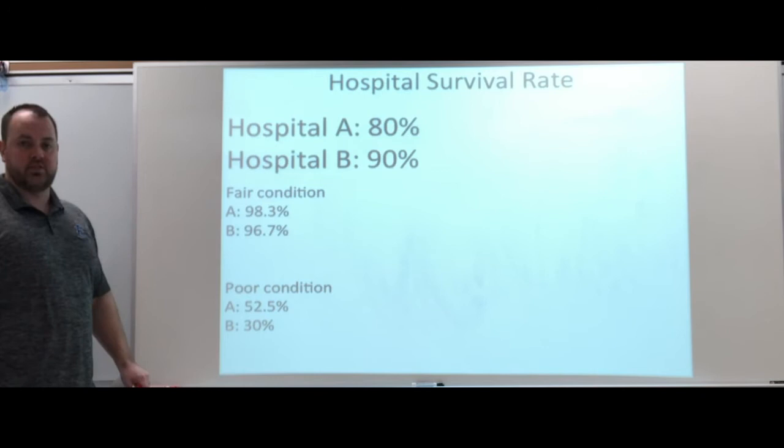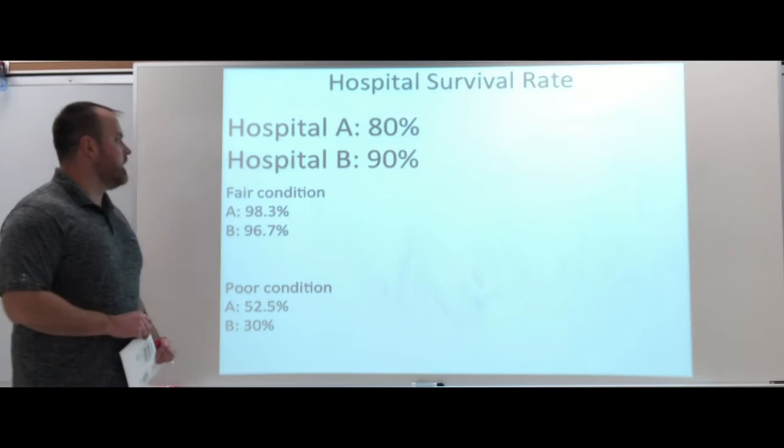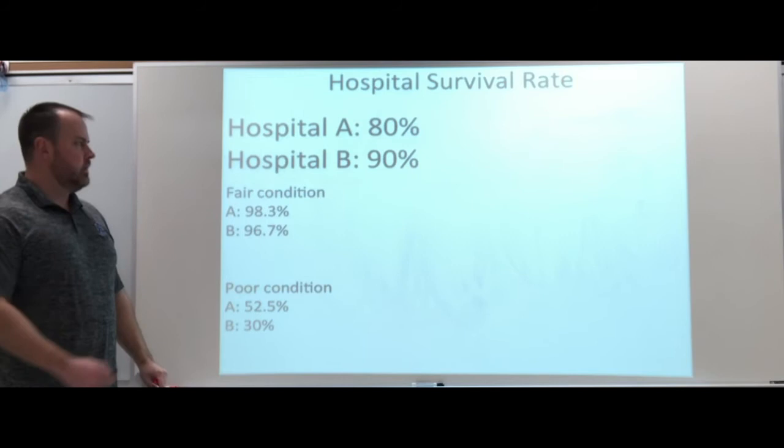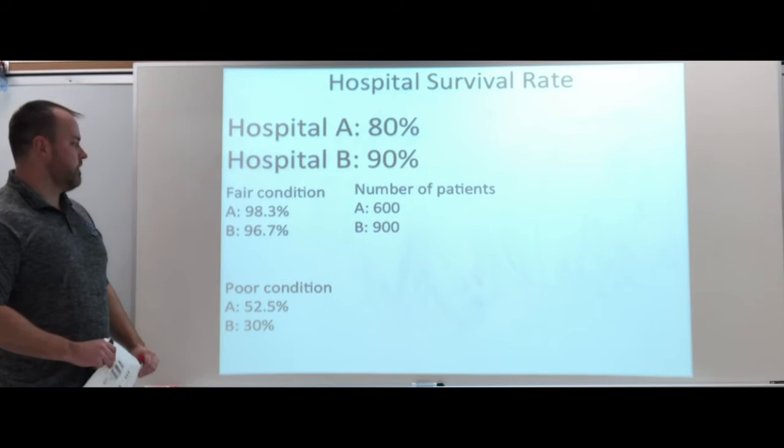In both these breakdowns though, A has a higher percentage. So now let's look at the volume. Where is the volume at? If we look at our overall, maybe kind of think real quick. Where do you think the high volume is for Hospital B? Where do you think the higher volume for Hospital A is?